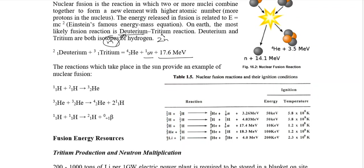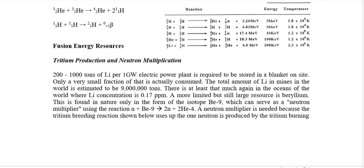Looking at the reaction itself, we utilize one neutron in deuterium and two neutrons in tritium — three neutrons total — while only one neutron is output from the reaction. In the fusion reaction, neutrons are absorbed, which means the reaction will stop. We therefore need a neutron multiplier for tritium production and continuation of the reaction. In a nuclear fusion reactor we provide a blanket of beryllium on the nucleus side.